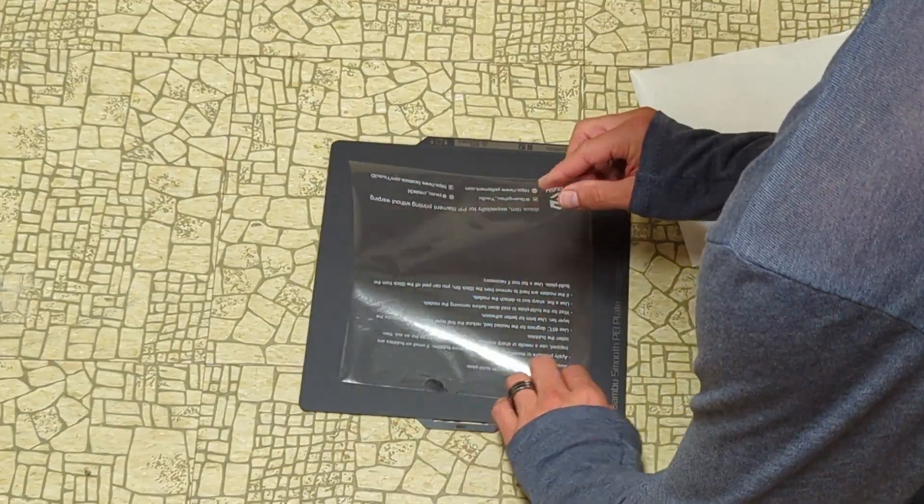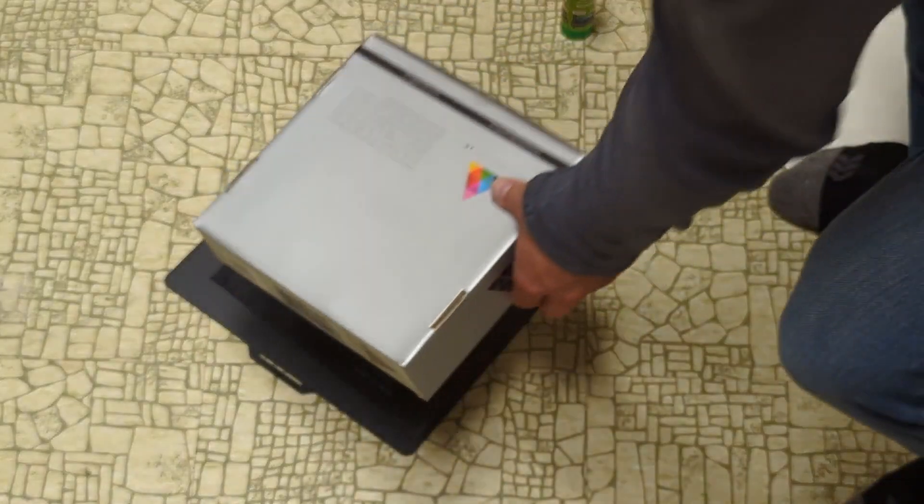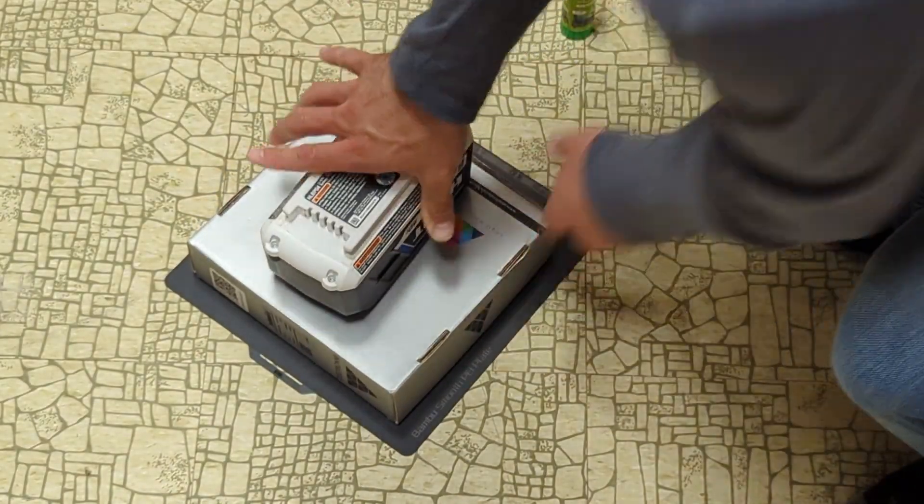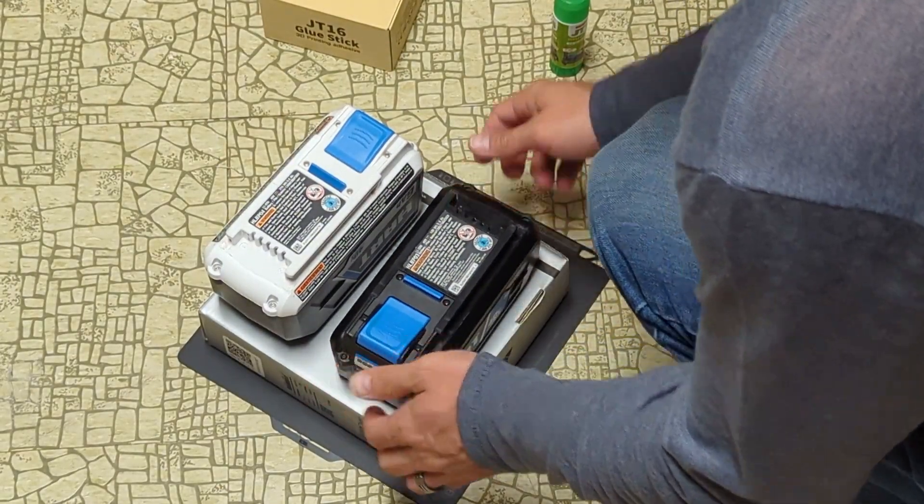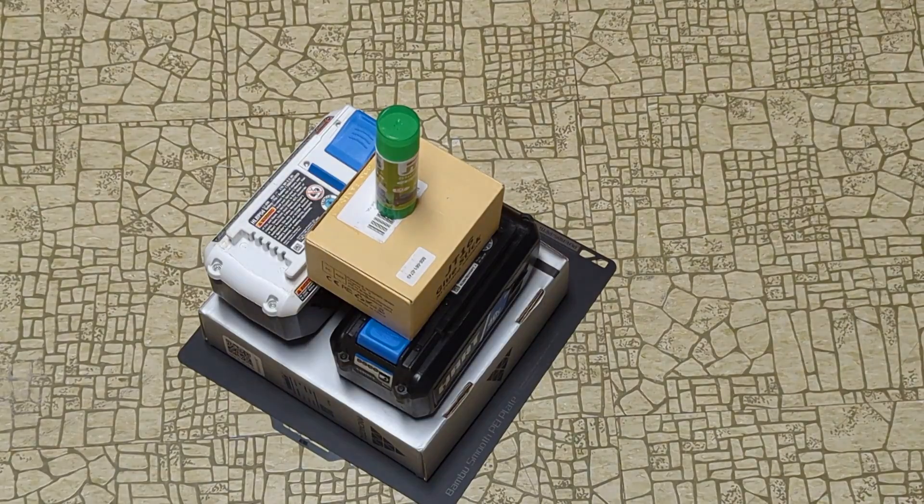I tried to keep as many air bubbles and crinkles out of it as I could and then once I had the adhesive sheet on it, I ended up weighing the adhesive sheet down with a box of filament and I put some heavy batteries on top of that and left it for about 30 minutes to make sure that the sheet was adhered really well to the print bed.